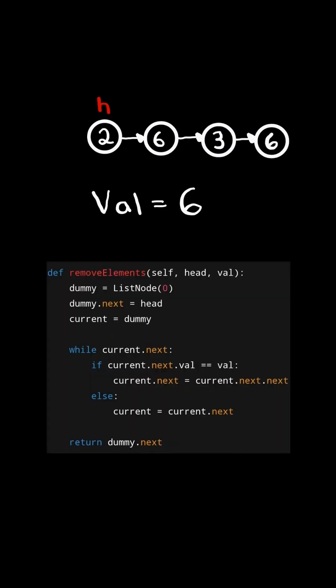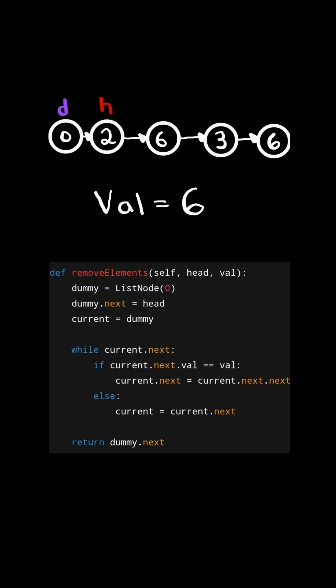First, consider the code below. We will create a dummy node at the start of the linked list and set its next value to the head, and initialize another pointer, current, and set it equal to the dummy node.